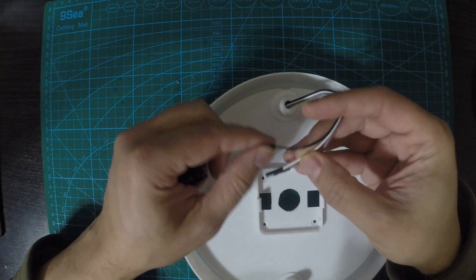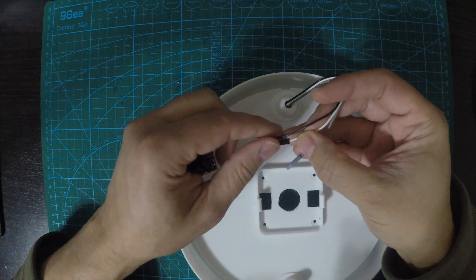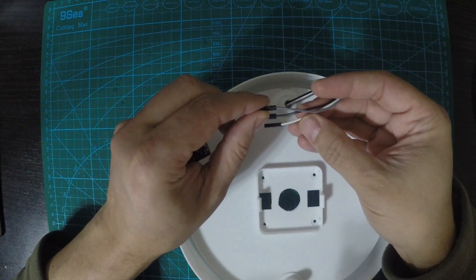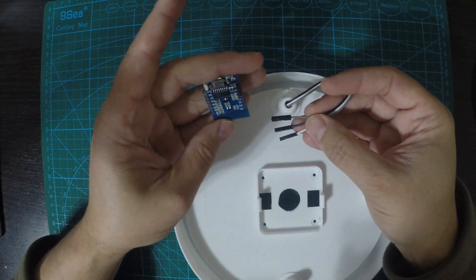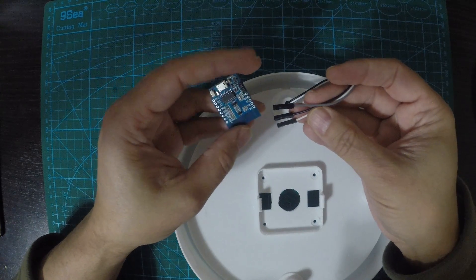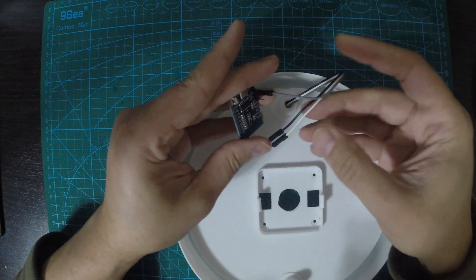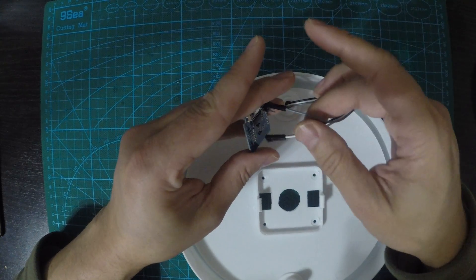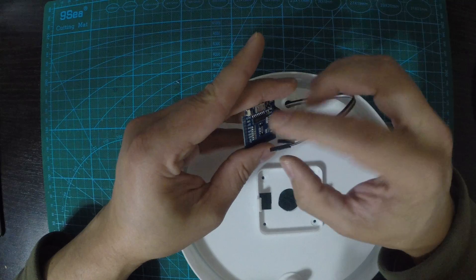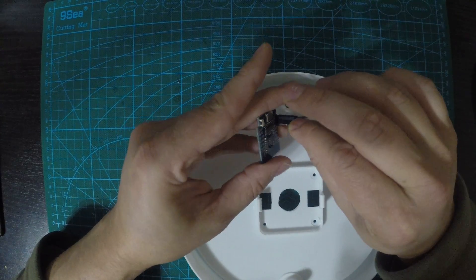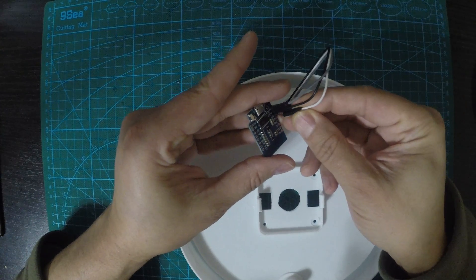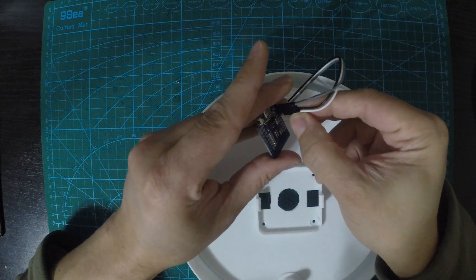So my data line is on the white cable. My ground is black and my 5V DC is on the green. So let's just connect this up. White which is my data line, black which is my ground, and green which is my 5V DC.